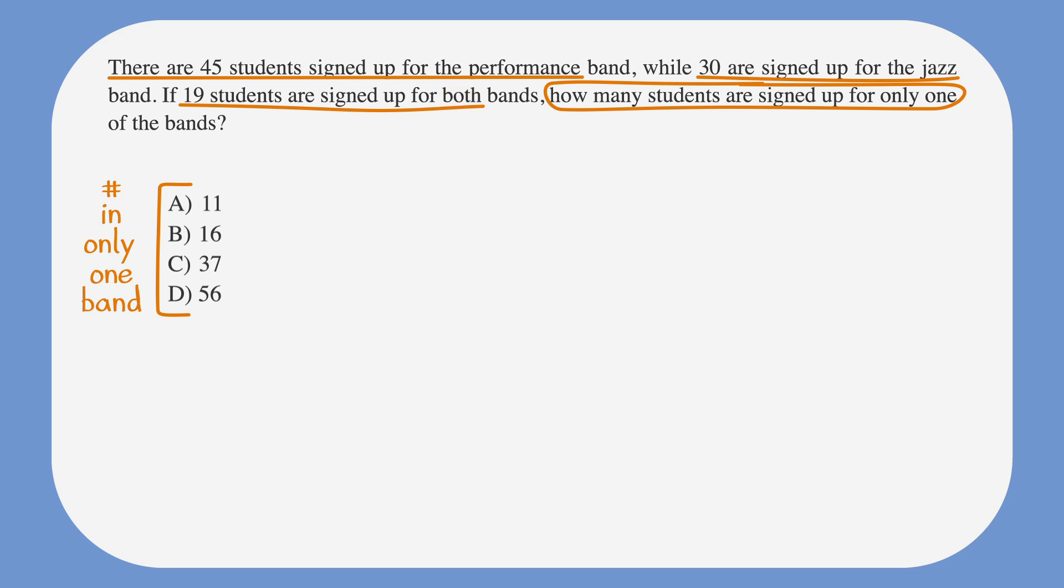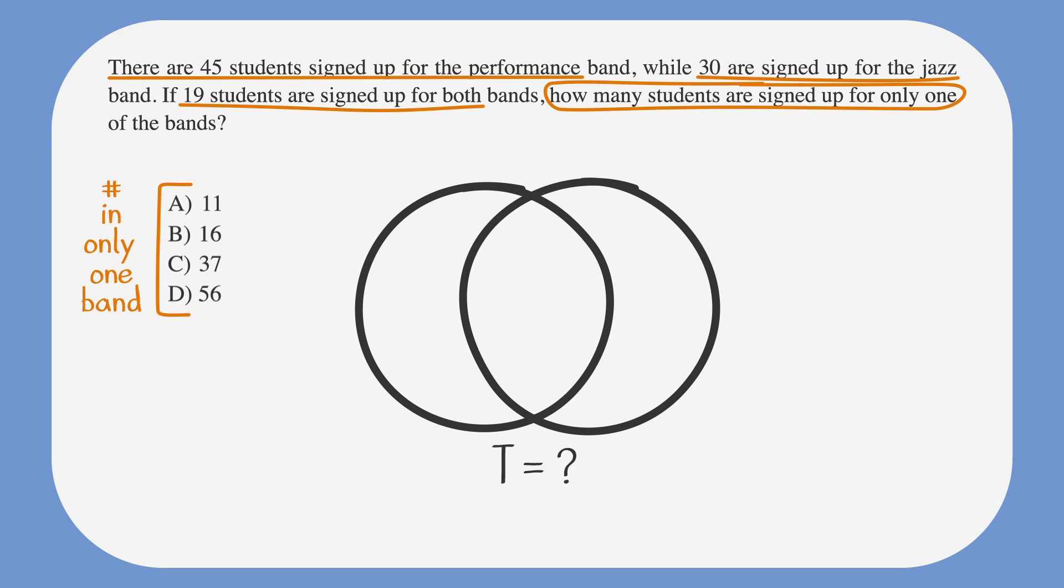Let's start by drawing a basic Venn diagram made up of two overlapping circles. We'll want to write the total number of students beneath the Venn diagram, so let's write T equals for now. Now let's put the information given in the problem into the drawing.